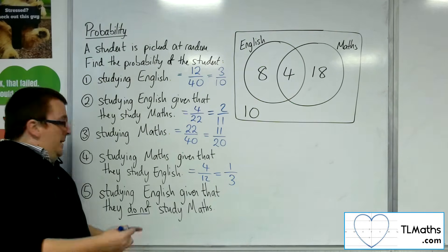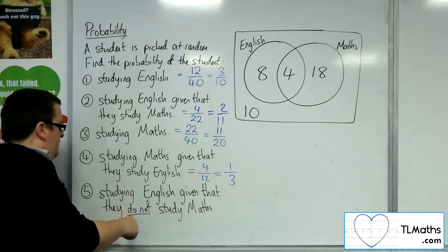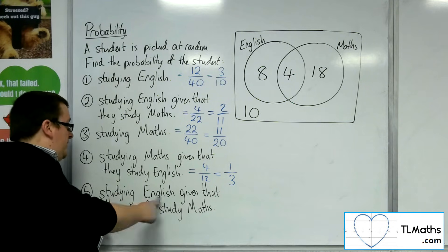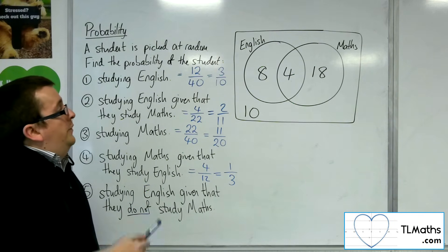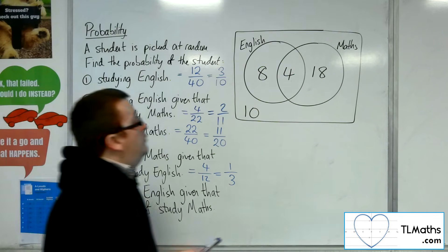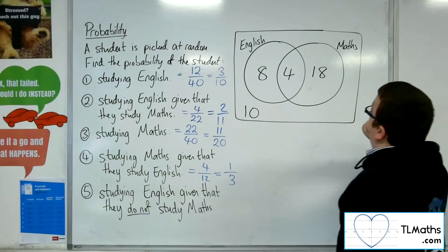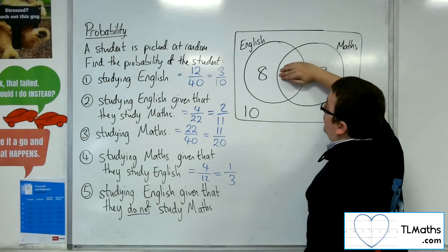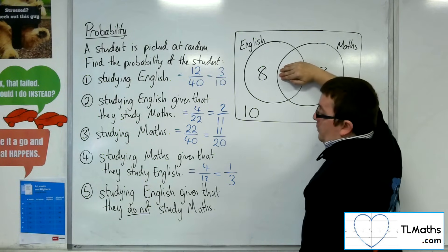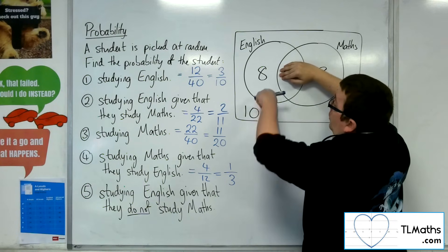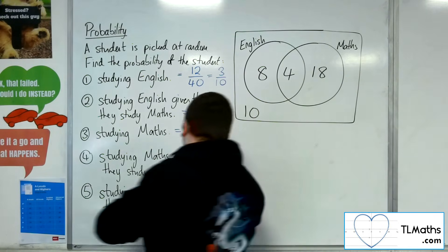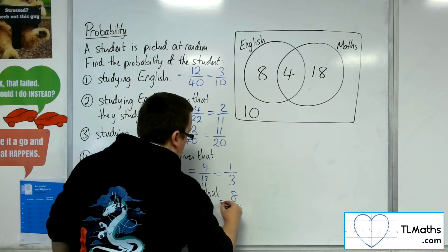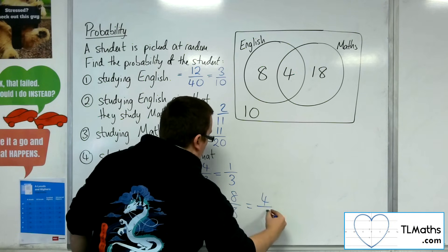Finally, what's the probability of choosing a student that studies English given that they do not study maths? We're told that they don't study maths, so we can cover up all the students that do study maths. Now what's the probability of choosing someone who studies English? There are 8 English students out of the 18, so it's 8 out of 18, which is 4 ninths.